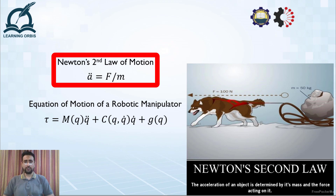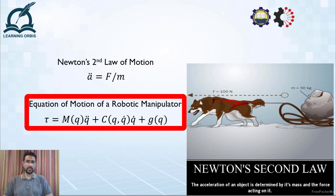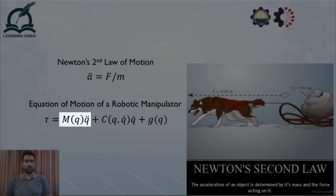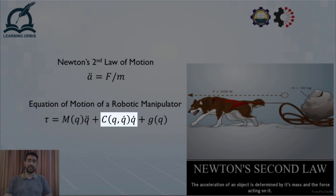But that equation is seriously simplified, because in reality the applied force is not just used for imparting acceleration — it is consumed in a number of other things as well. For robotic manipulators, this force is consumed in primarily three things: first, to impart acceleration to the robotic links; second, to overcome the Coriolis, centripetal, and centrifugal forces; and third, to overcome the gravitational forces acting on the robot.